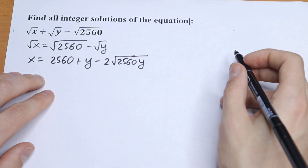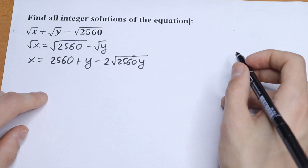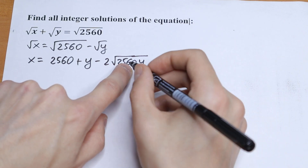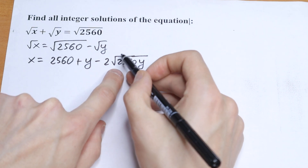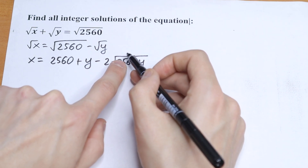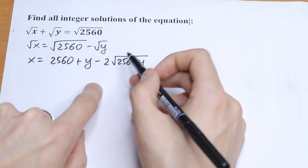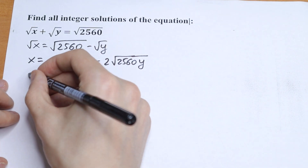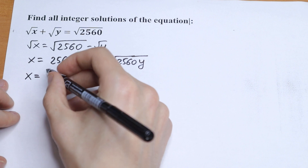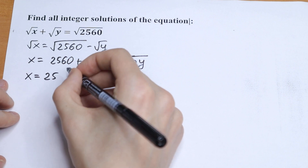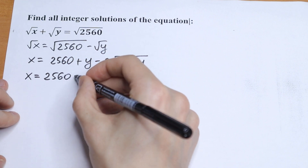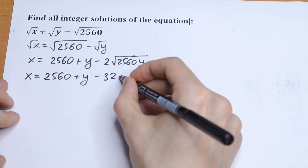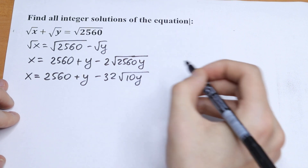We can simplify this a little bit. We write 2560 as 256 times 10, and take the square root to get 16. Then 16 times 2 will be 32. So the final simplified expression is: x equals 2560 plus y minus 32 times square root of 10y.